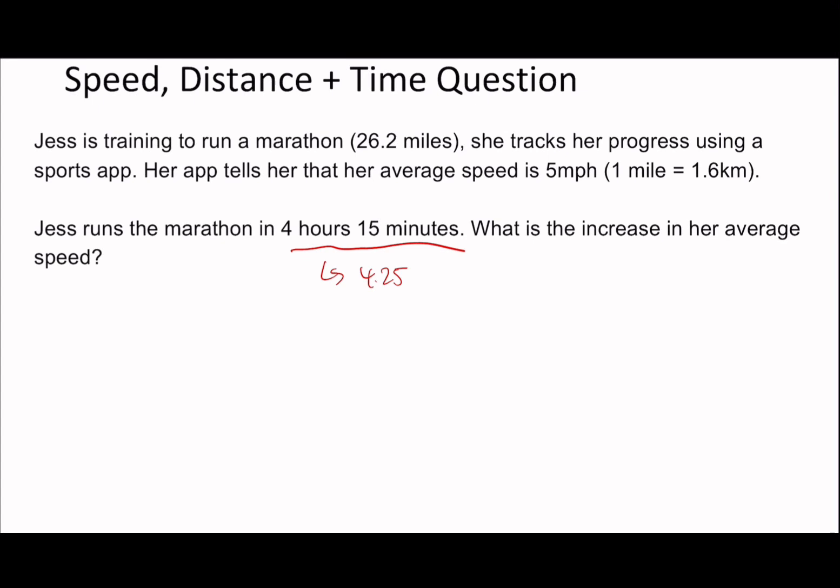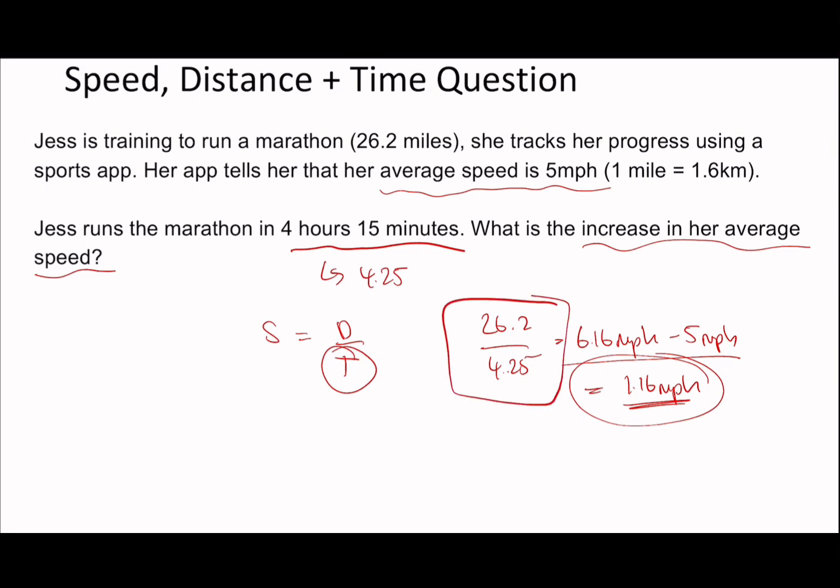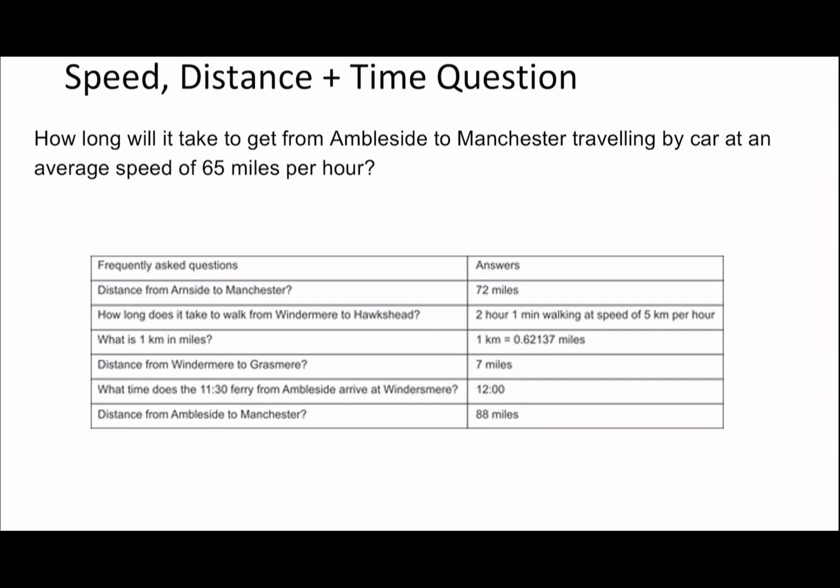Pause if you want to try this. We're told one average speed, so we calculate the other. Remember, speed is distance divided by time, with time always on the bottom. So 26.2 divided by 4.25 equals 6.16 miles per hour. Subtract the original 5 miles per hour to find the increase: 1.16 miles per hour. Not too difficult, just a nice introductory question.